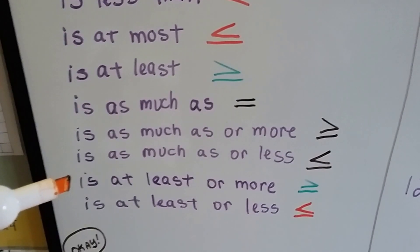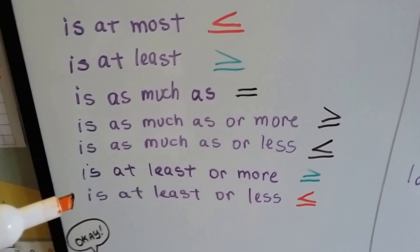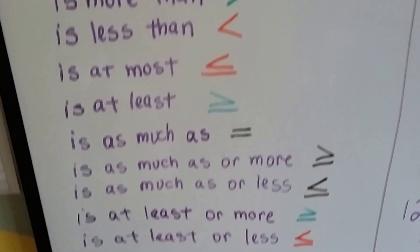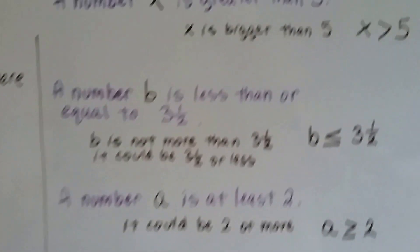'Is at least or more' means it's greater than or equal to. And 'at least or less' means less than or equal to. Alright? So, let's decipher these and see how I got to those symbols.